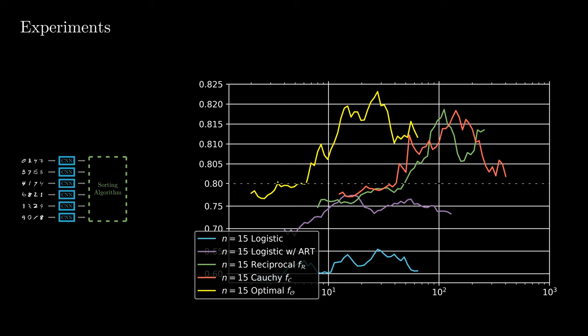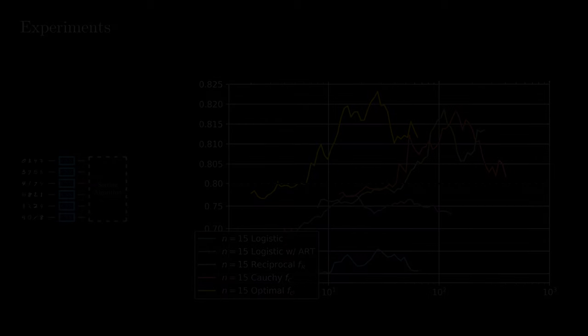However, we find that for other sorting architectures, the smoother Cauchy distribution performs better. Further, we find that the error-optimal distribution has a high robustness to the hyperparameter. We find that the reciprocal and Cauchy distribution perform comparable. However, also considering other settings, Cauchy usually performs better and is more robust to the hyperparameter beta than reciprocal. Finally, we find that logistic and logistic with the activation replacement trick perform substantially worse almost independent of the hyperparameters.